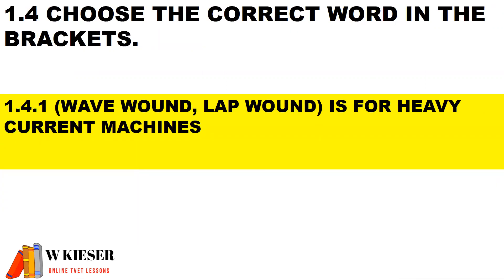Choose the correct word inside the brackets. This wound armature assembly is for heavy current machines, therefore low voltage, so it will be lap wound.